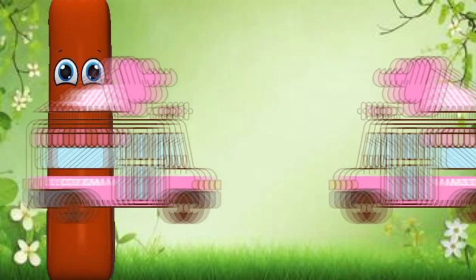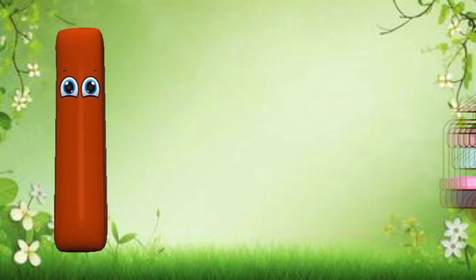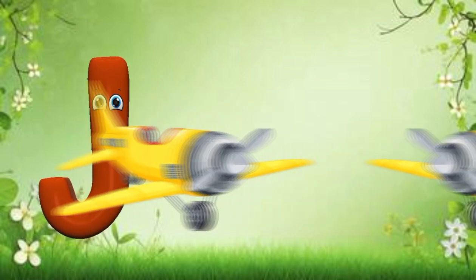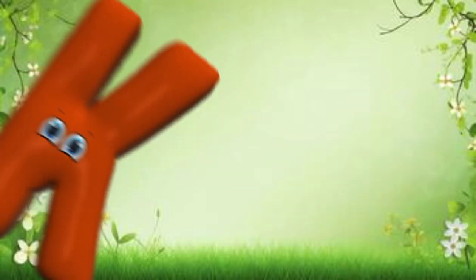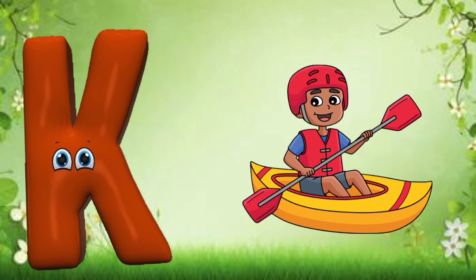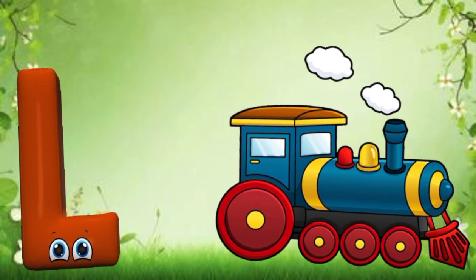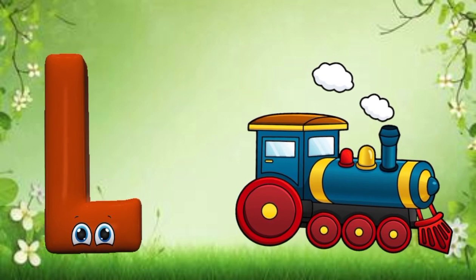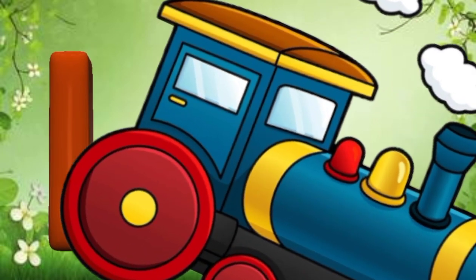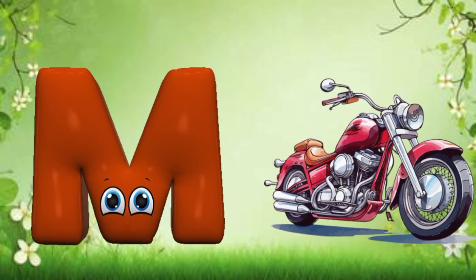I is for ice cream truck, ice cream truck. J is for jet, jet. K is for kayak, kayak. M is for motorcycle, motorcycle.